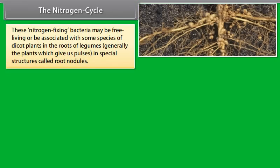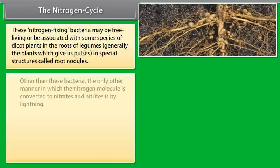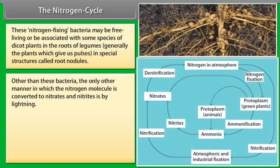These Nitrogen fixing bacteria may be free living or be associated with some species of Dicot plants in the roots of Legumes, generally the plants which give us pulses, in special structures called root nodules. Other than these bacteria, the only other manner in which the Nitrogen molecule is converted to Nitrates and Nitrites is by Lightning.